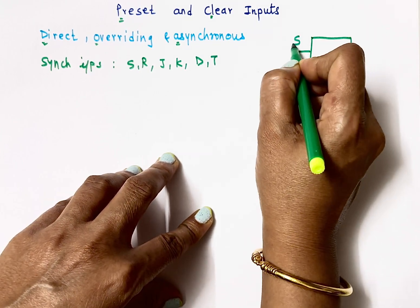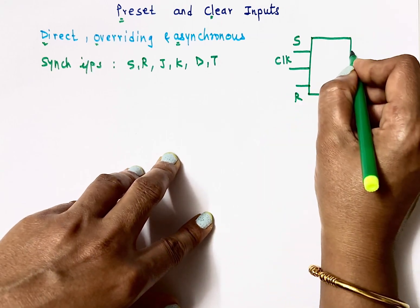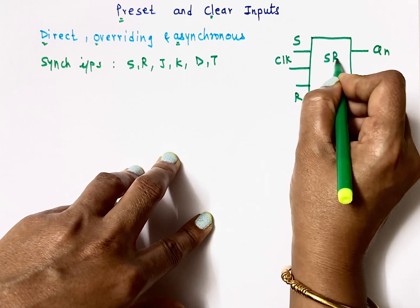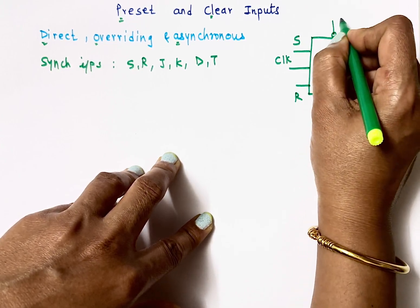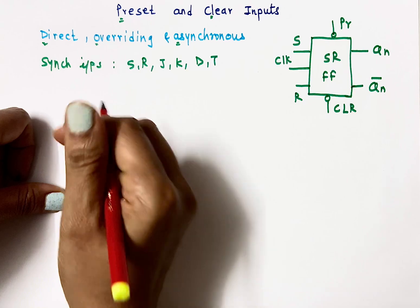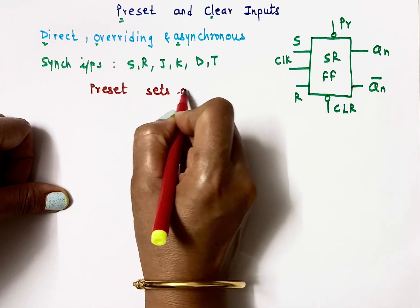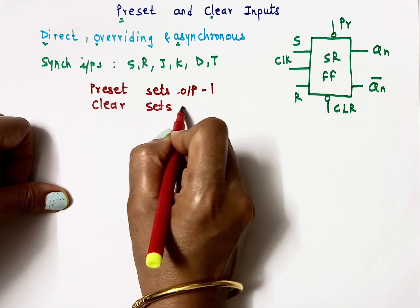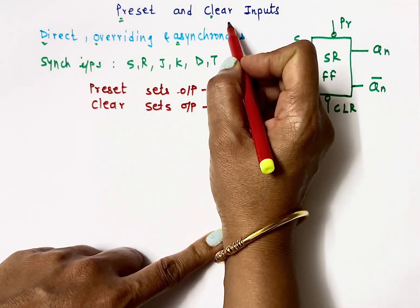In the SR flip-flop, inputs are Set, Reset, and Clock, and the outputs are Qn and Qn-bar. There are two additional inputs: preset and clear. Preset sets the output to 1 — that is, preset makes the output 1 — whereas clear sets the output to 0.